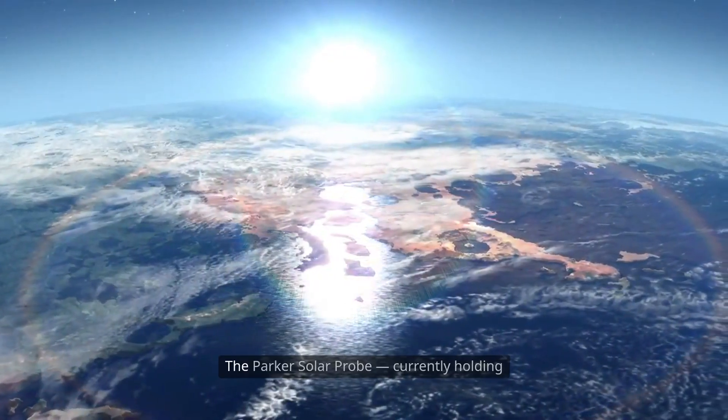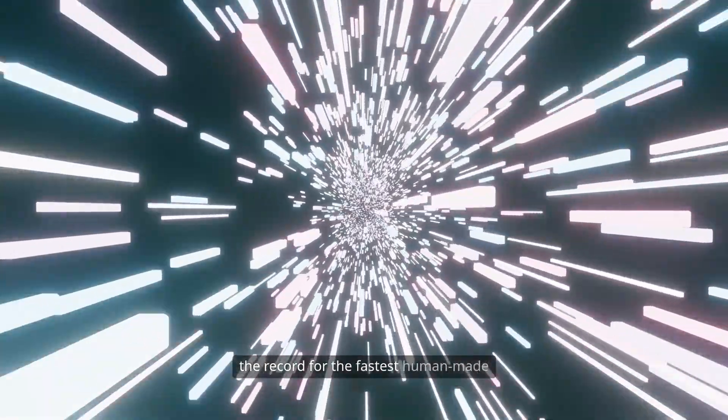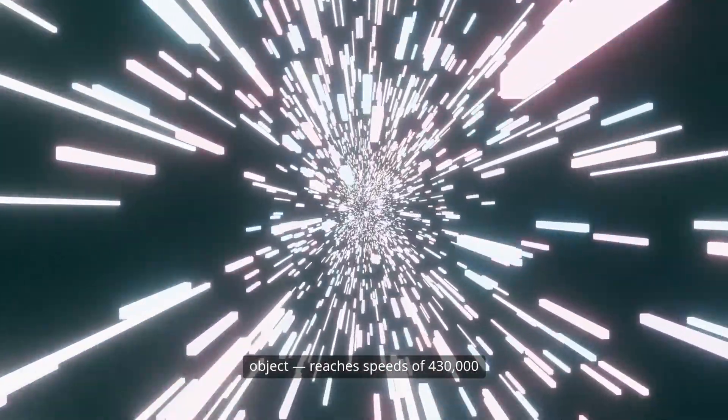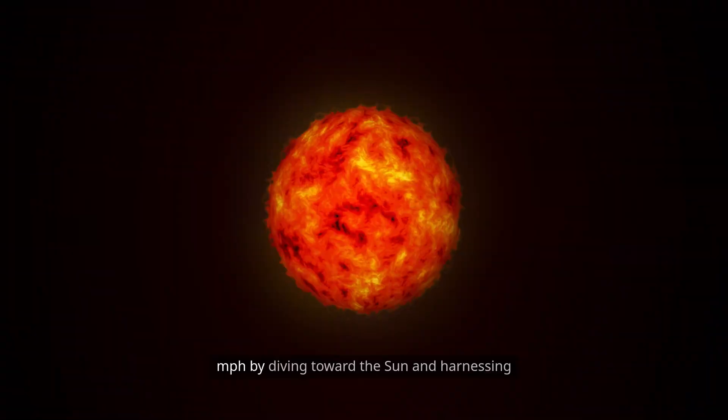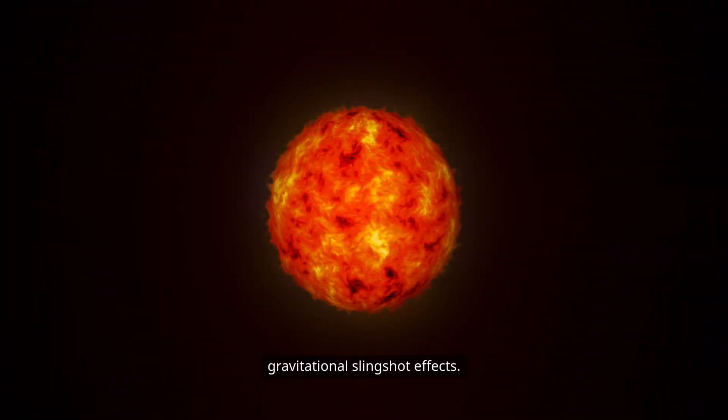Let's raise the stakes. The Parker Solar Probe, currently holding the record for the fastest human-made object, reaches speeds of 430,000 miles per hour by diving toward the sun and harnessing gravitational slingshot effects.